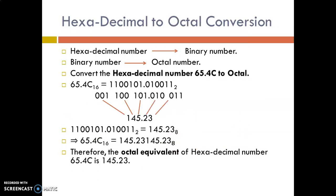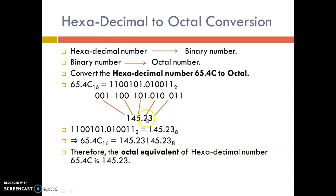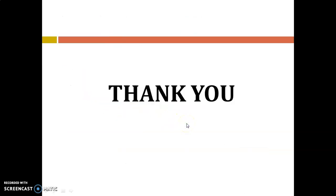Next, we will see how to convert hexadecimal to octal. To convert hexadecimal to octal, we follow two steps: first convert hexadecimal to binary by taking each digit separately and representing them in groups of 4 bits. Then convert that binary number to octal by making groups of 3 bits and writing the octal equivalent. This is how we convert a hexadecimal number to an octal equivalent. Now we have seen different conversions of how to convert any number system to another number system.